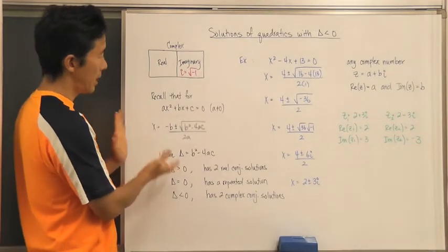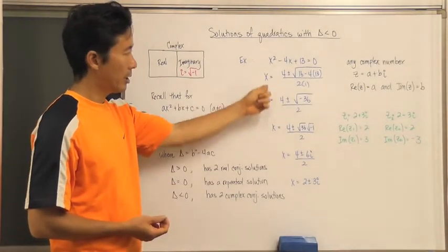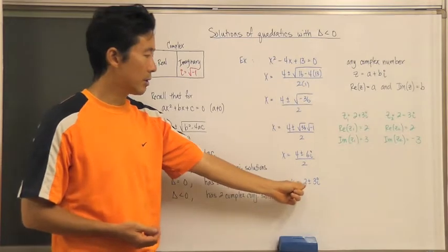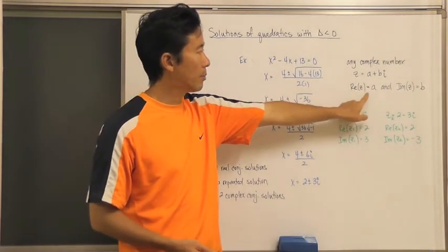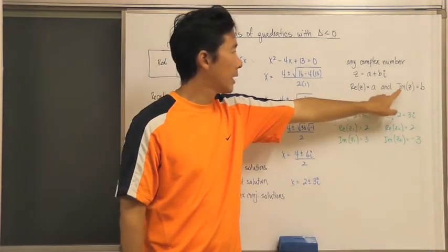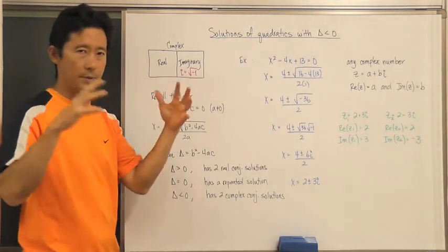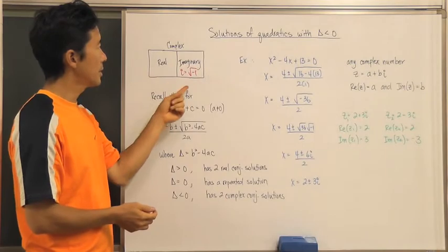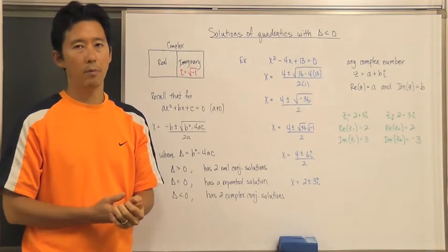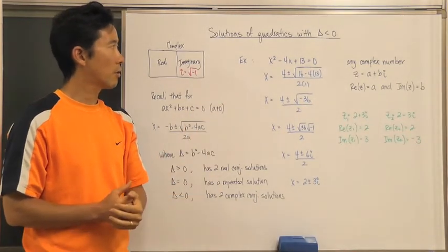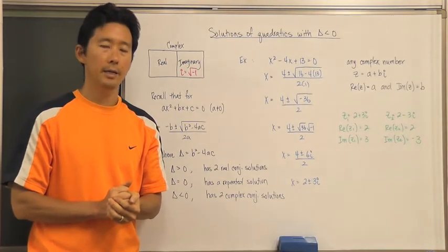To wrap everything up: when a quadratic has a discriminant less than zero, its solutions are complex numbers of the form a plus b i, where a is the real part and b is the imaginary part. In terms of number systems, the complex number system is the union of the real and the imaginary numbers. We'll take a closer look at how to work with complex numbers next time — see you later.